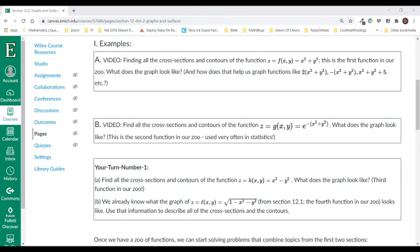Okay, what we're going to do in our second example is use cross sections and contours to come up with another very commonly used function that we're going to see a lot of. The function we want to look at here is g of xy equals e to the minus quantity x squared plus y squared.